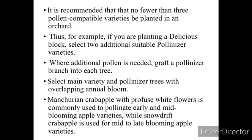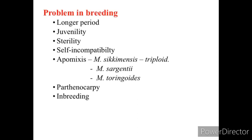Snowdrift crabapple is used for mid-to-late blooming apple varieties. There are various problems in breeding, like longer juvenile period — juvenility is longer in apple, therefore flower formation is very late. Another problem is sterility, meaning the inability of either pollen or ovum to form an embryo. Self-incompatibility is defined as the inability of the pollen to fertilize and form a flower. Apomixis is defined as formation of seed without fertilization, while parthenocarpy is defined as formation of fruit without fertilization.